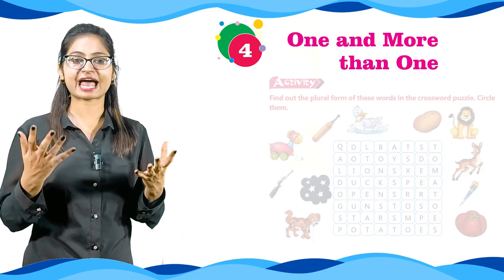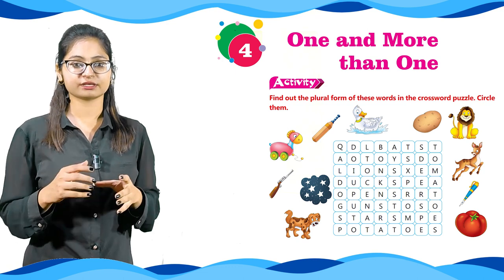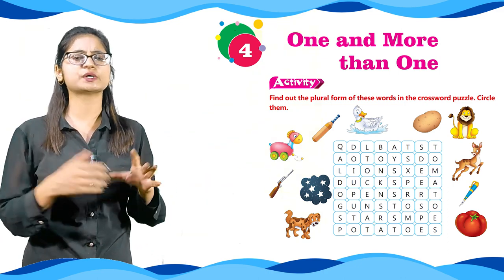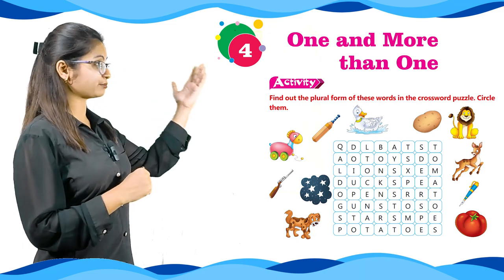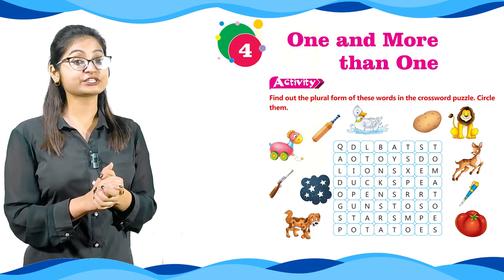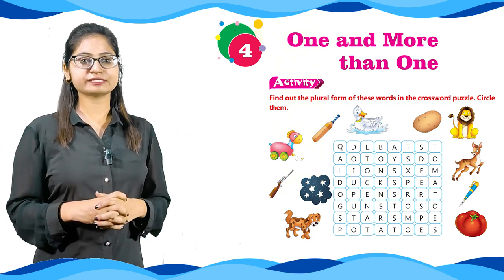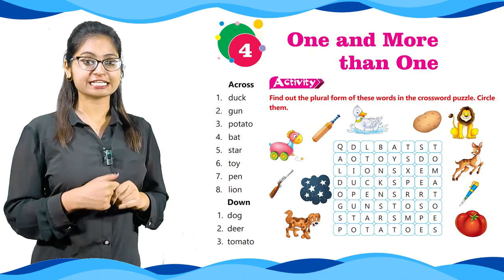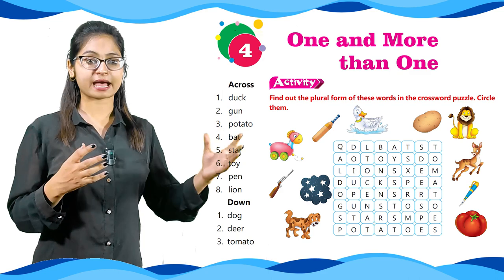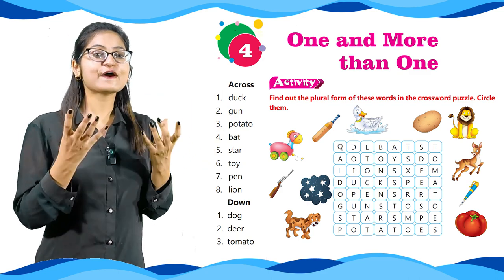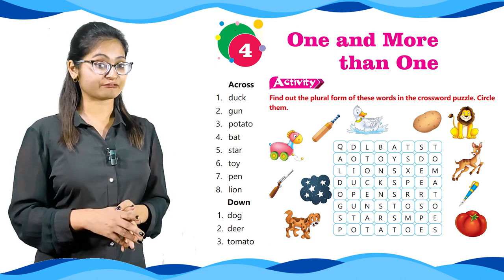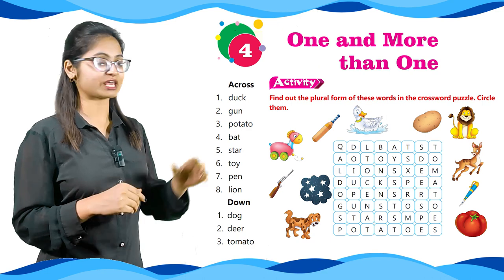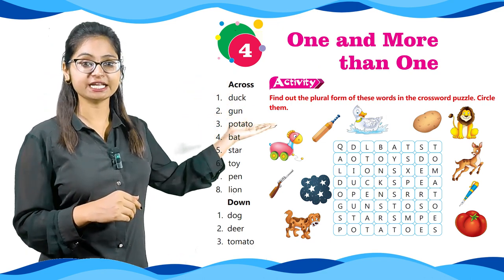Okay kids, let's do some activity. Find the plural form of these words in the crossword puzzle and circle them. You can see there is a grid with various words. You have to look at the pictures and make plural words. The across words are: duck, gun, potato, bat, star, toy, pen, lion. The down words are: dog, deer, tomato.